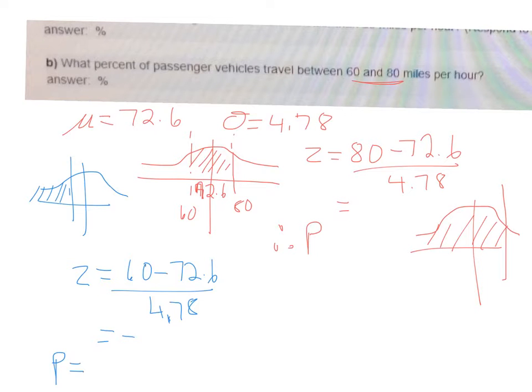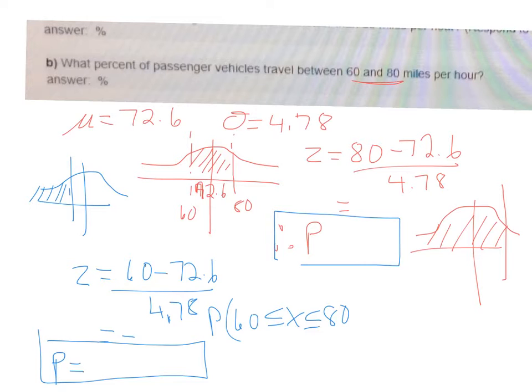So what you want to do is take the probability that you got here for the 80 and the probability that you get here for the 60, and you're going to subtract those two. And that will give you the probability that you have X in between 60 and 80 miles per hour.